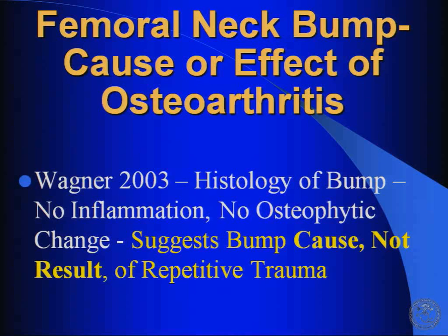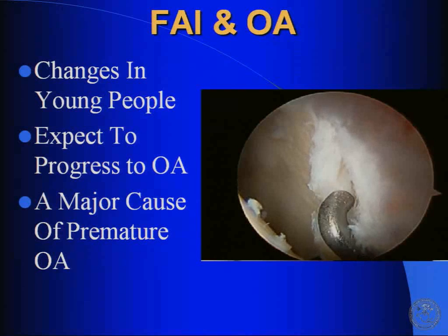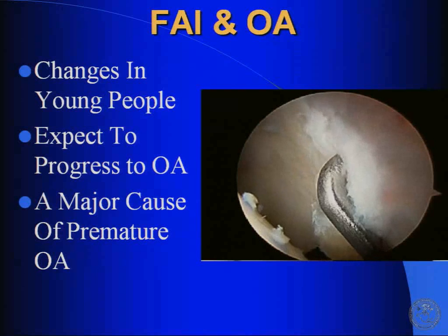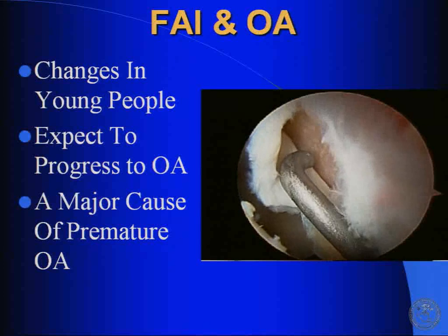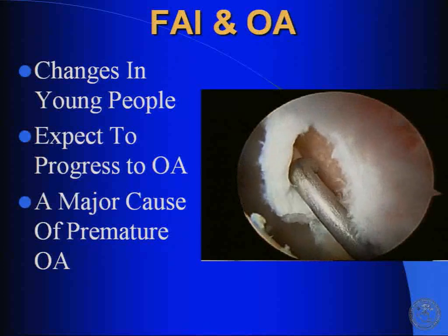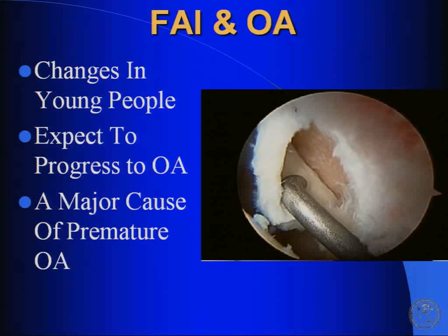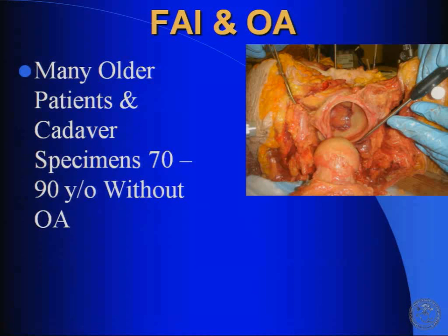The Swiss group has also shown that they feel the bump or loss of offset at the head and neck junction is the cause — not the result — of the repetitive trauma from impingement leading to arthritis. When I see some of my patients, here's a 20-year-old gentleman with CAM type impingement and a nice delamination of the articular cartilage. You see these changes in young people that you would expect to progress to osteoarthritis — this might become a loose body, leading to wear of articular cartilage against the bone of the acetabulum and premature arthritis.